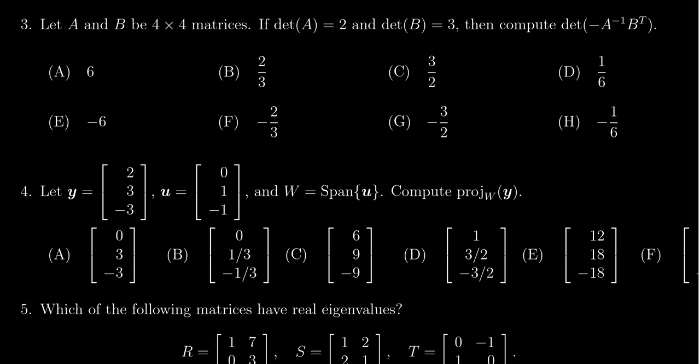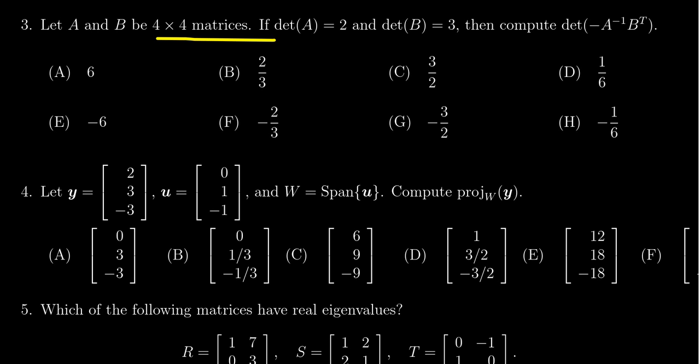In this video, we're going to provide the solution to question number three from practice exam number three from Math 2270, for which we're supposed to let A and B both be four by four matrices.